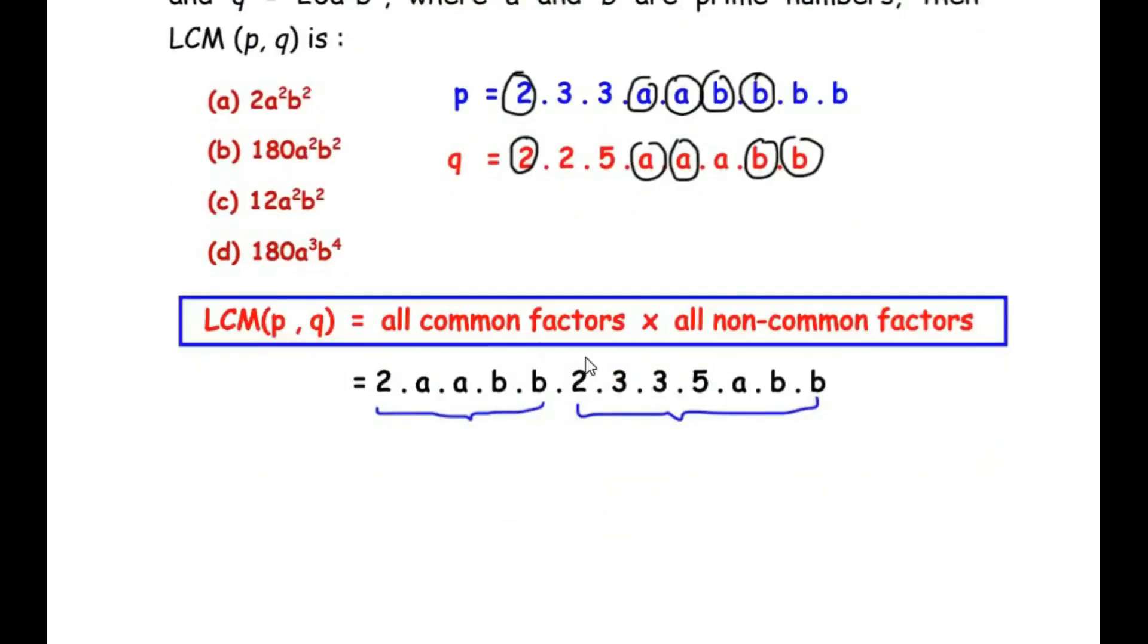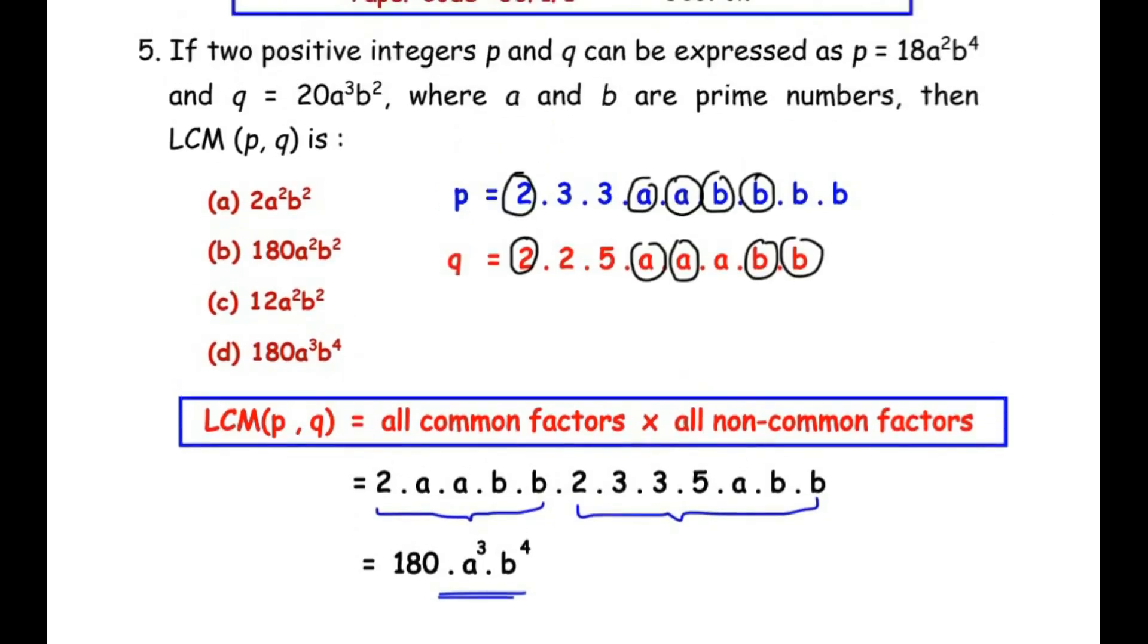Here we have to multiply all the numbers first: 2 times 2 is 4, 4 times 3 is 12, 12 times 3 is 36, and 36 times 5 gives us 180. So let us write here 180 times. Now a times a times a gives us a³, and b times b times b times b gives us b⁴. So this is the LCM of p and q. Let us see if it is in the options, so here we have option D.